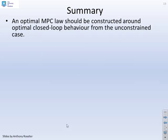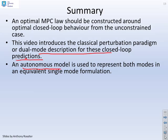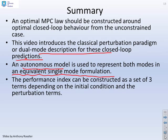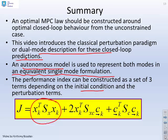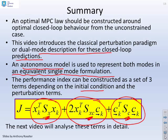So a summary. An optimal MPC law should be constructed around the optimal closed loop behavior from the unconstrained case. So we've argued that. And this video introduces the classical perturbation paradigm or dual mode description for these closed loop predictions. And in essence, we've shown you how you can build them. And we've used an autonomous model to represent both modes in what is an equivalent single mode formulation, but obviously a mode which has many more states. The performance index can now be constructed as a set of three terms, which depend on the initial condition and the perturbation terms. So you can see the bit that depends on the initial condition. Obviously, you can't change that. You've got a bit which is linear in the perturbation terms, and you've got a bit which is quadratic in the perturbation terms. And what we've shown is the code for defining this sx, this sxc, and this sc is very, very simple on MATLAB and very brief. And what we'll do in the next video is we'll look at these terms in a bit more detail to understand what they tell us.